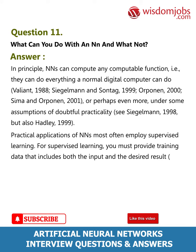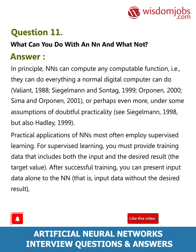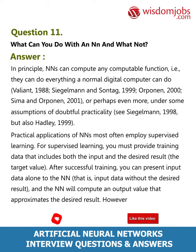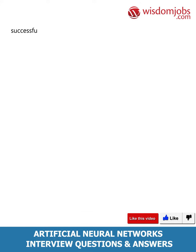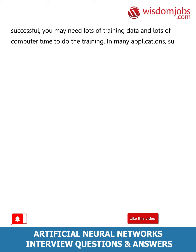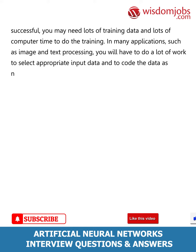After successful training, you can present input data alone to the NN — without the desired result — and the NN will compute an output value that approximates the desired result. However, for training to be successful you may need lots of training data and lots of computing time. In many applications such as image and text processing, you will have to do significant work to select appropriate input data and code it as numeric values.